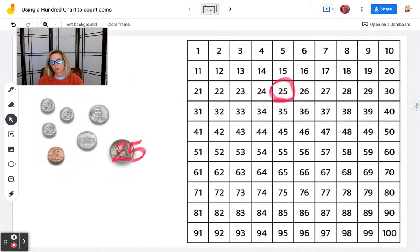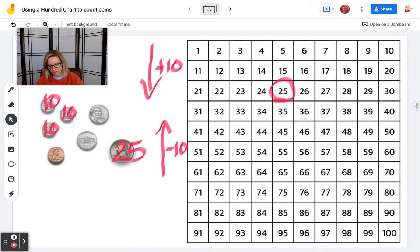Then we're going to go to our next largest coin, which is the dime. We have three dimes, right? And I know on a 100 chart, when I go down one, I'm adding 10. When I go up one, I'm subtracting 10. So if I have three dimes, I need to add three tens. I'm going to go down one, down two, down three. Now I'm at 55 cents.